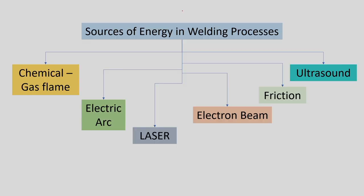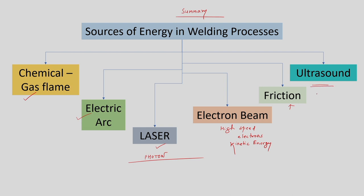This is a summary of the various energy sources: chemical, gas flame-based energy, electric arc — which is further converted into thermal energy — laser and solar where we use photon energy, electron beam with high speed electrons and kinetic energy of the electrons, and friction which generates thermal energy due to friction. Ultrasonic vibrations are also used.